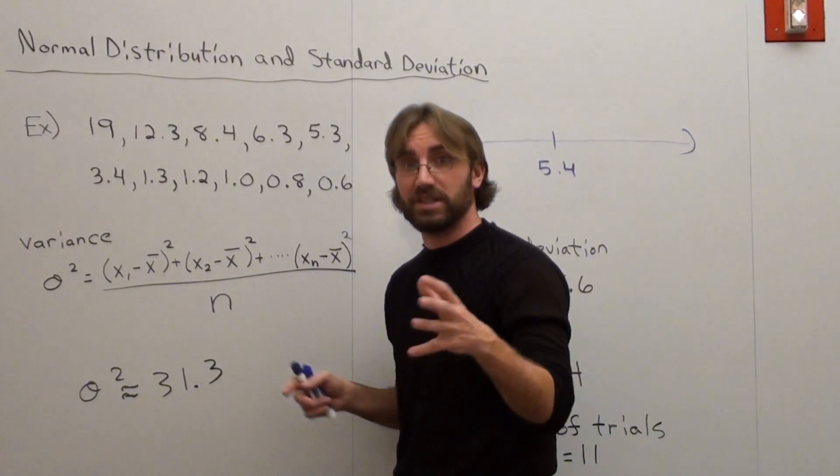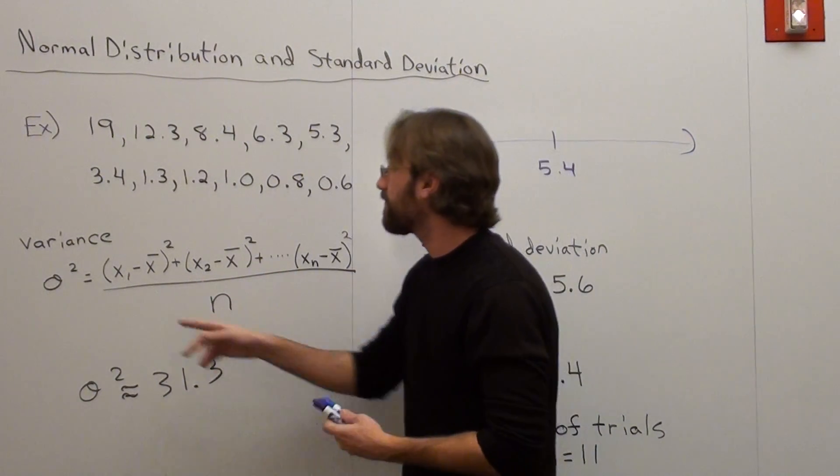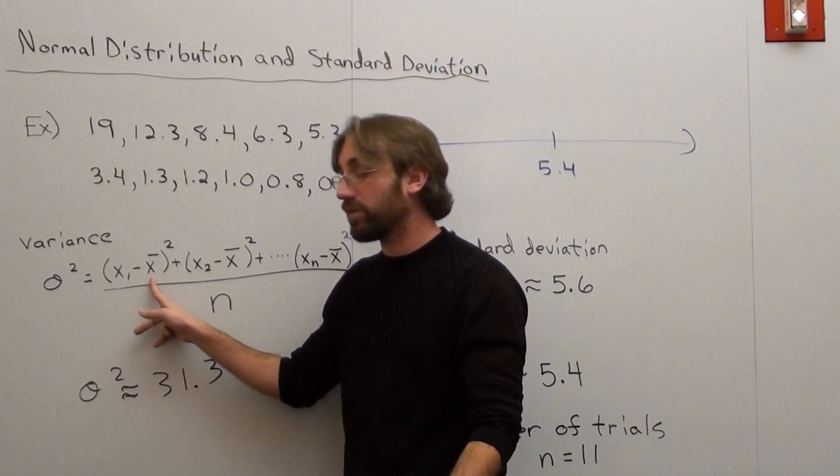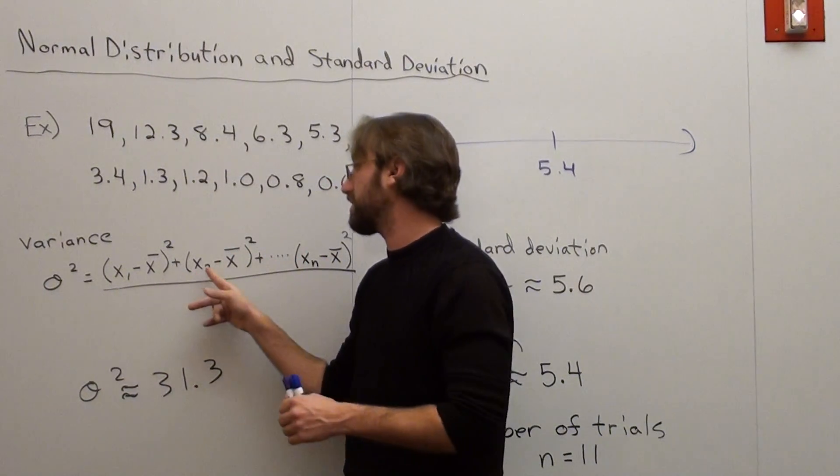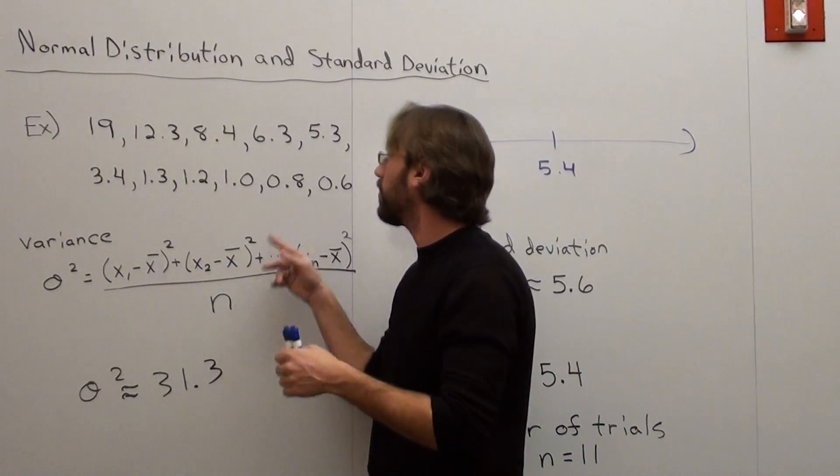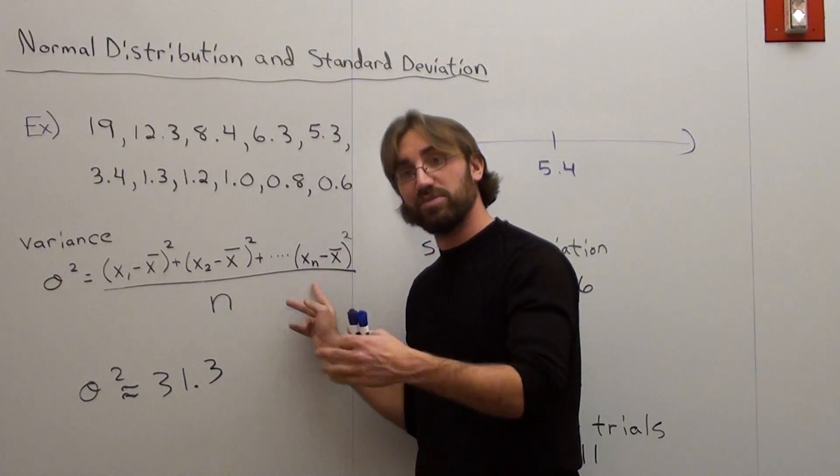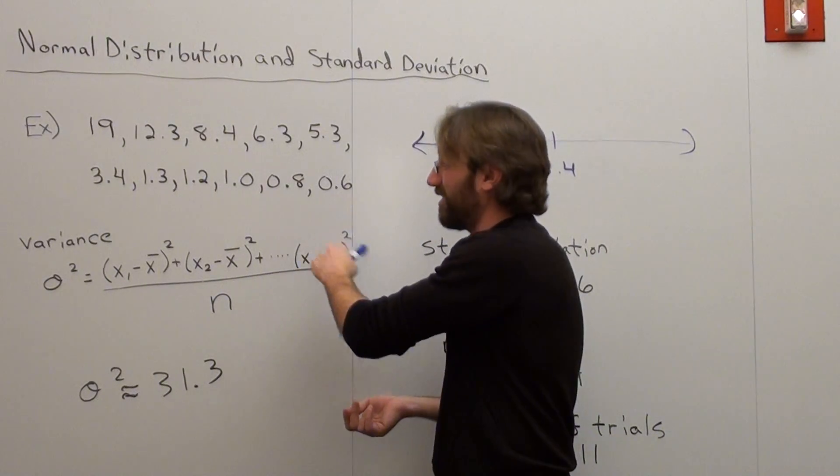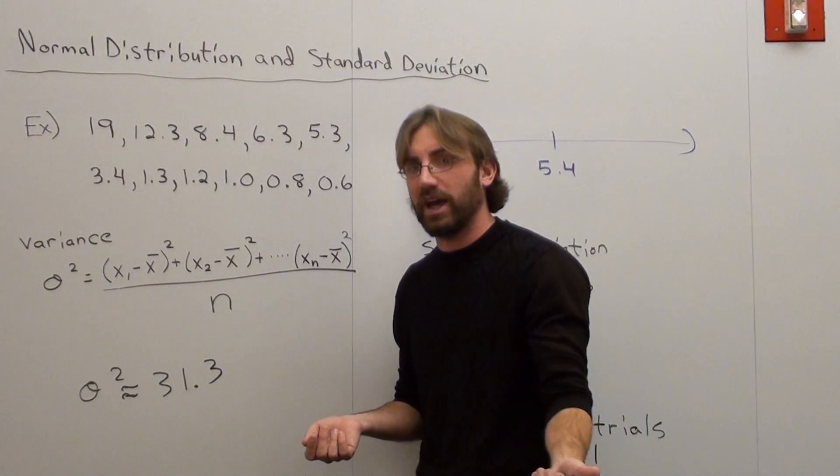Here's the formula right here. It's a little annoying, but I'll explain it. You take your first x term, which is 19, and subtract by your mean, which is 5.4, in parentheses squared, plus 12.3 minus 5.4 in parentheses squared, all the way up until 0.6 minus 5.4 in parentheses squared. That's why I didn't write the problems out, because I'm not going to sit there and do this.